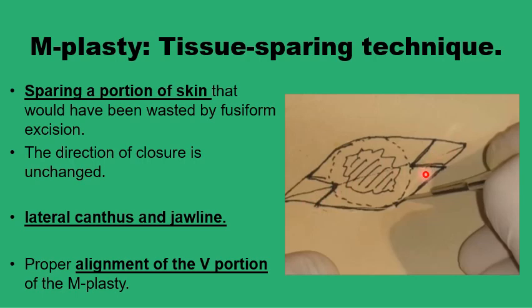The M-plasty is a tissue-sparing technique that preserves part of the skin that would have otherwise been lost to avoid a dog ear. The design of the M-plasty, centered on the edge of the safety margin and extending to the margin of the ellipse, preserves this rhomboid shape of skin on both sides.